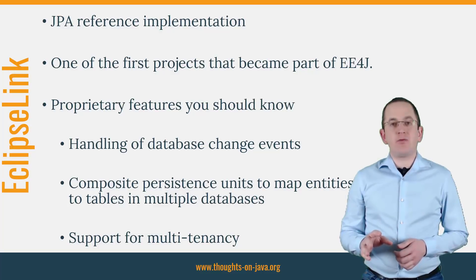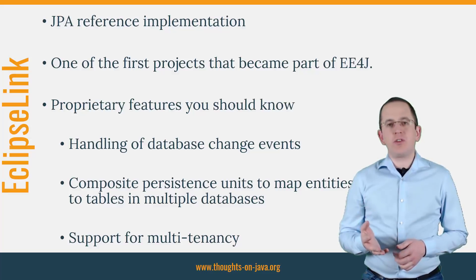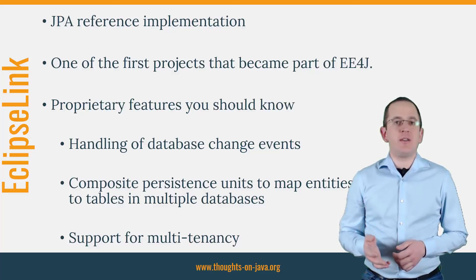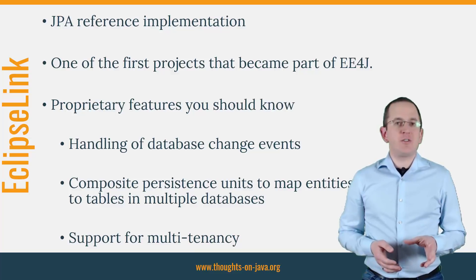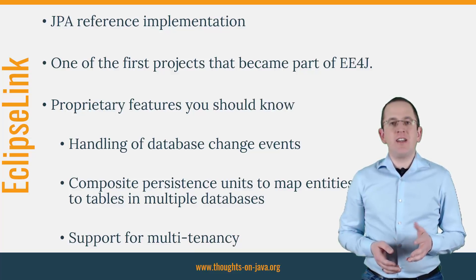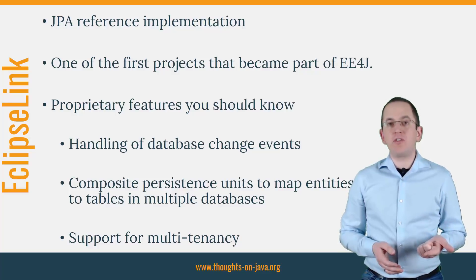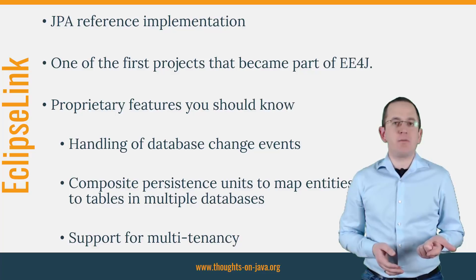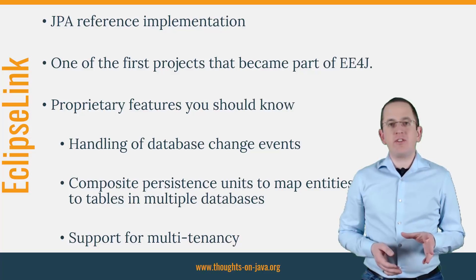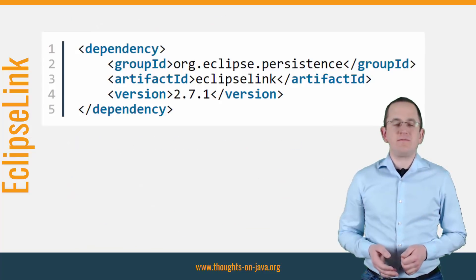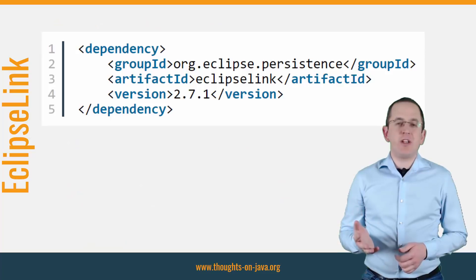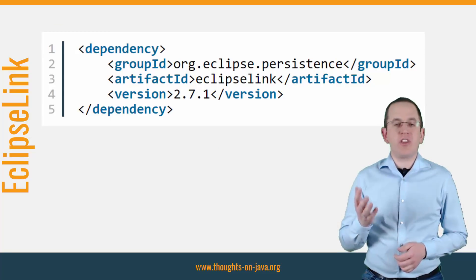EclipseLink is JPA's reference implementation and implements JPA version 2.2. It was one of the first projects that became part of EE4J. In addition to the features defined by the JPA standard, EclipseLink also offers several interesting proprietary features like handling of database change events, composite persistence units to map entities to tables in multiple databases, or support for multi-tenancy. I'll provide links to all of these features in the video description. The easiest way to add EclipseLink to your project is to use these Maven coordinates.